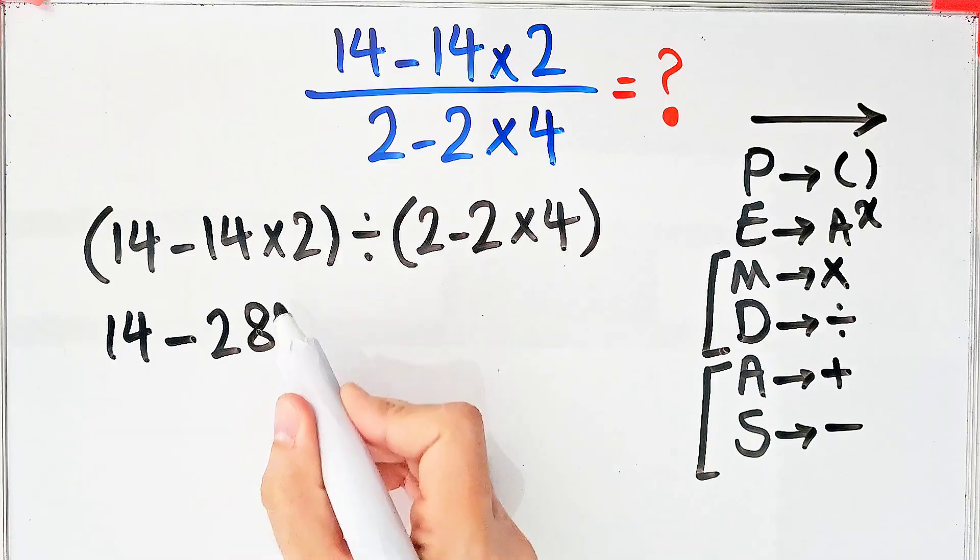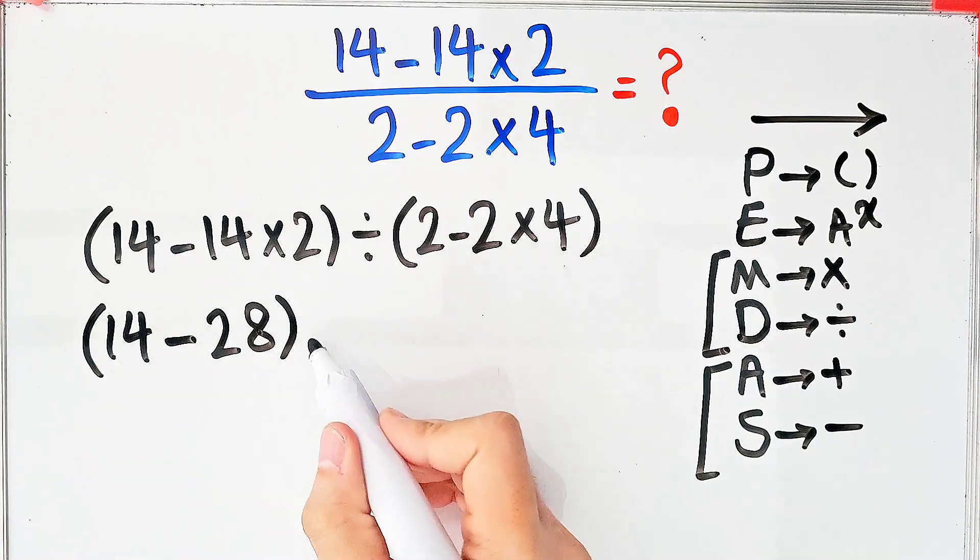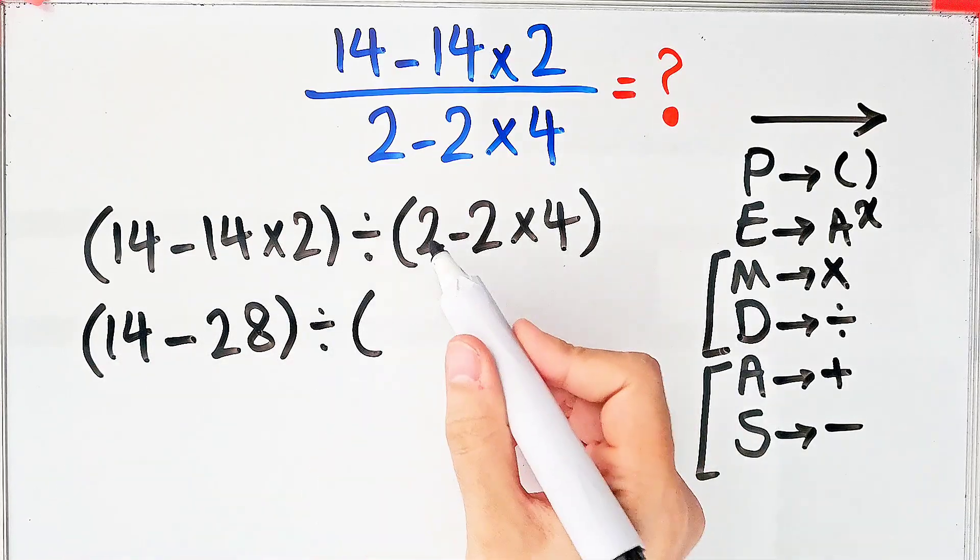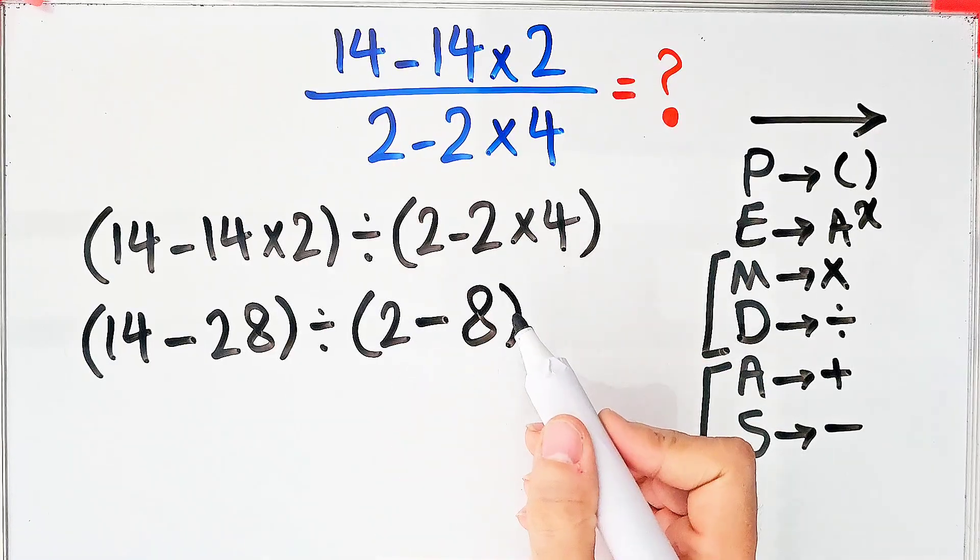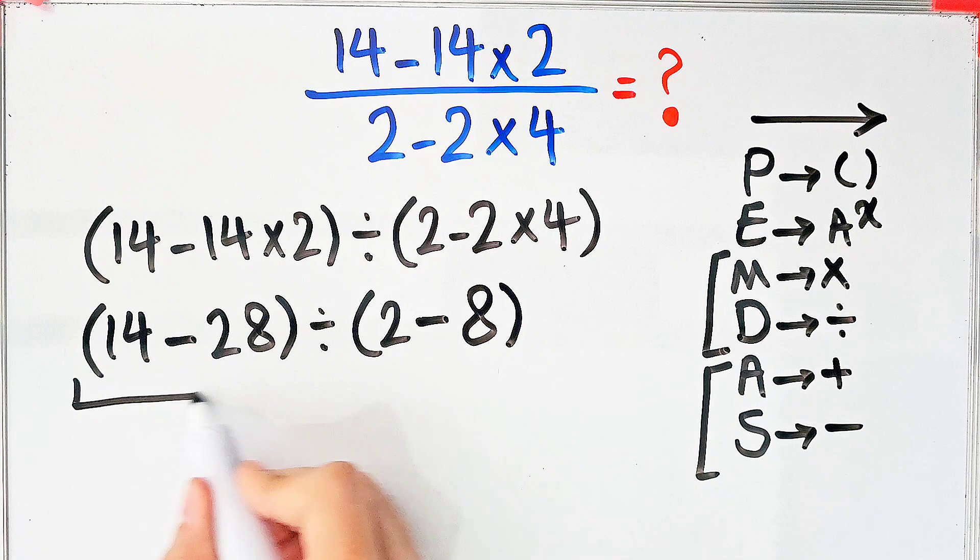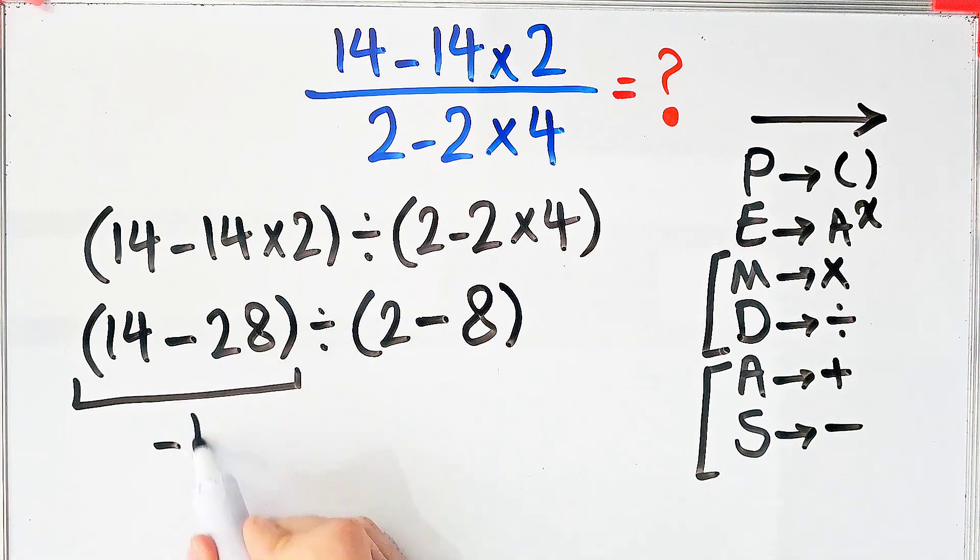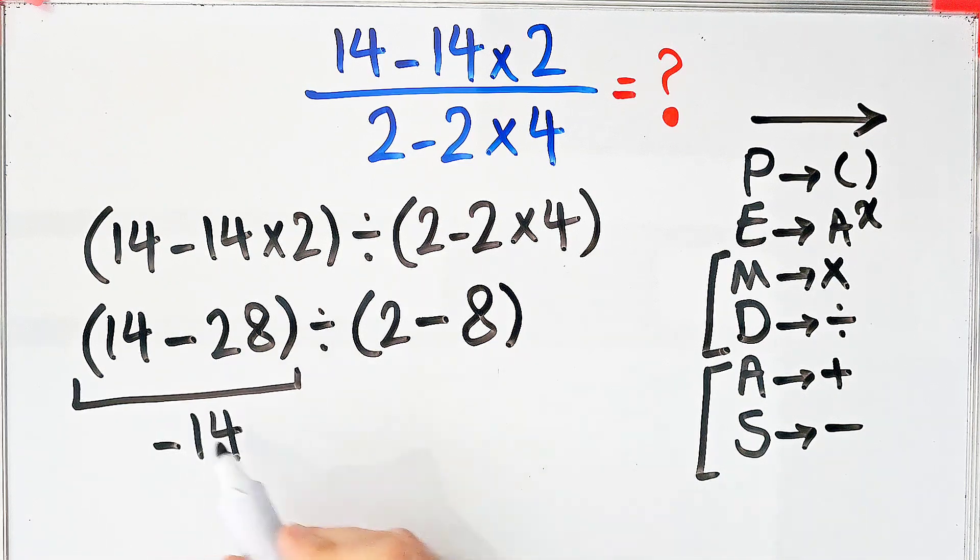And in the second parentheses, we have 2 minus 2 times 4, which equals 8. 14 minus 28 equals negative 14. Negative 14 divided by 2 minus 8, which equals negative 6.